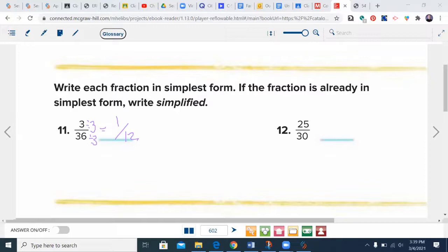Go ahead and do number 12: 25 over 30. Pause the video and come back when you're ready. Welcome back. The greatest common factor of 25 and 30 is 5, so I'll divide top and bottom by 5 and get 5 over 6.